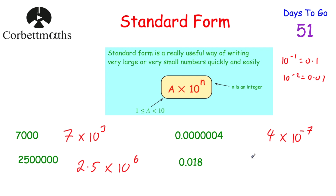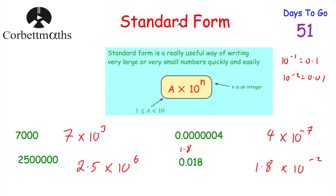Using the same approach for 0.018: the number at the front has to be between 1 and 10, so we choose 1.8. There are two zeros in front of it, so it's 1.8 × 10⁻². To recap, starting from 1.8 you'd need to move the digits 2 columns, which is why it's to the power of negative 2.